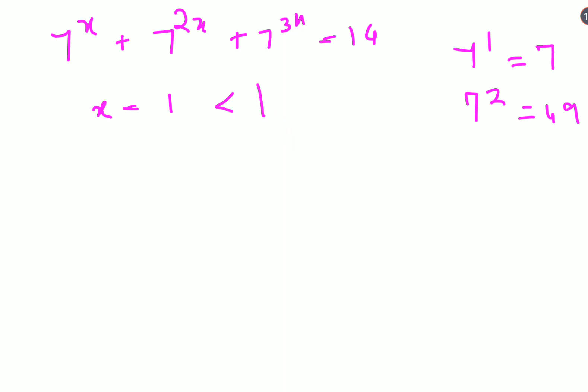So by default value of x has to be either 1 or less than 1. But if I had taken it as 1 what would have happened? It would have gotten you 7 plus 7 squared plus 7 cubed which is definitely not equal to 14. So in that case you need to be aware that the answer for this particular question has to be in 0.somethings.